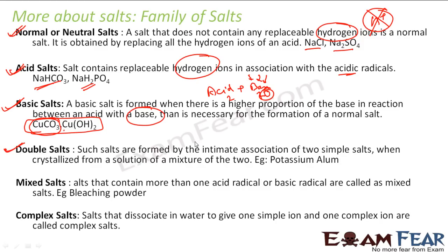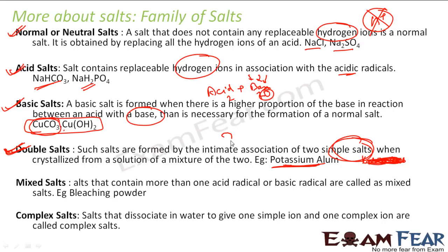Double salts are formed by the association of two simple salts. Potassium alum is an example — its formula involves K2SO4 and Al2(SO4)3 combined. Two simple salts form to create a bigger salt: salt 1 plus salt 2 gives salt 3. Because it is a combination of two salts, it is called a double salt. Potassium alum is a classic example of this.